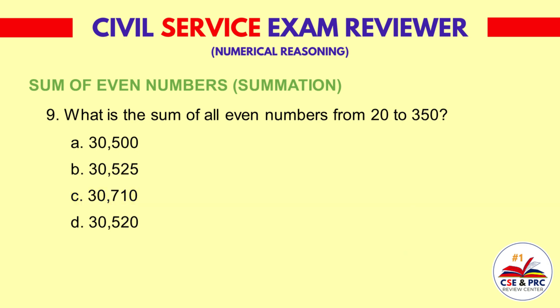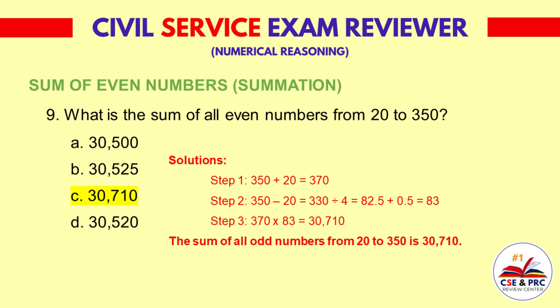Question 9: What is the sum of all even numbers from 20 to 350? a. 30,500  b. 30,525  c. 30,710  d. 30,520. The answer is c. 30,710.